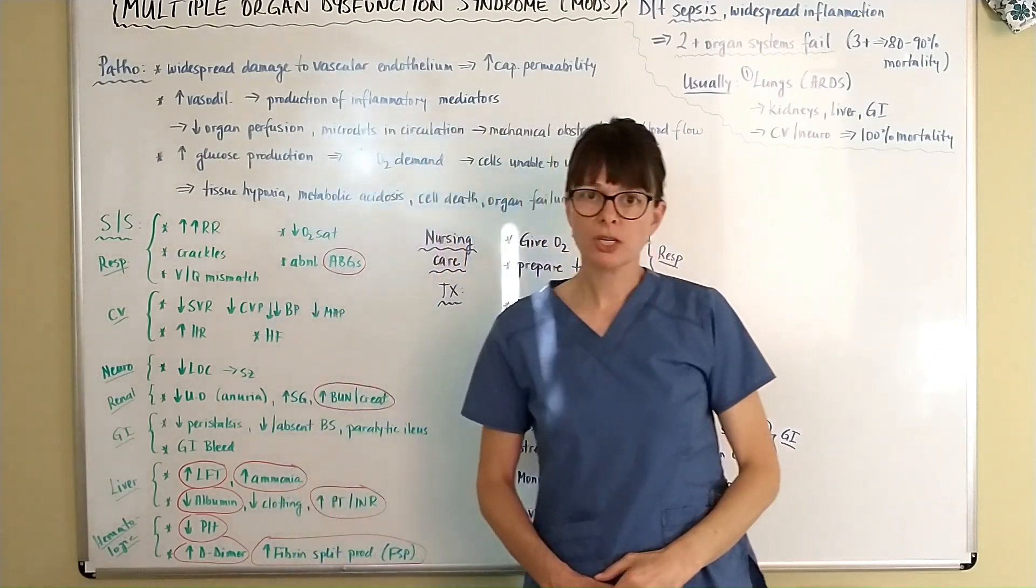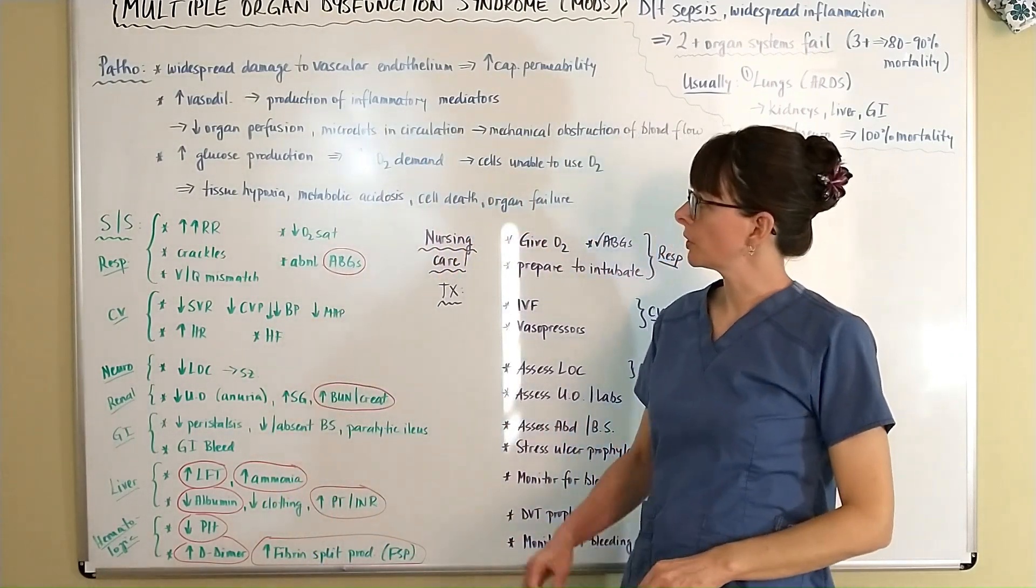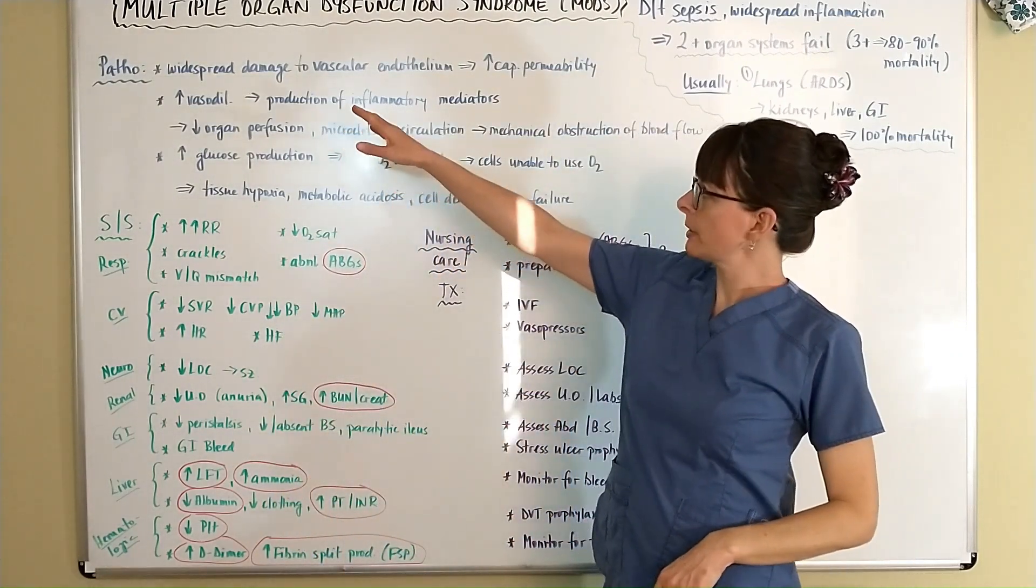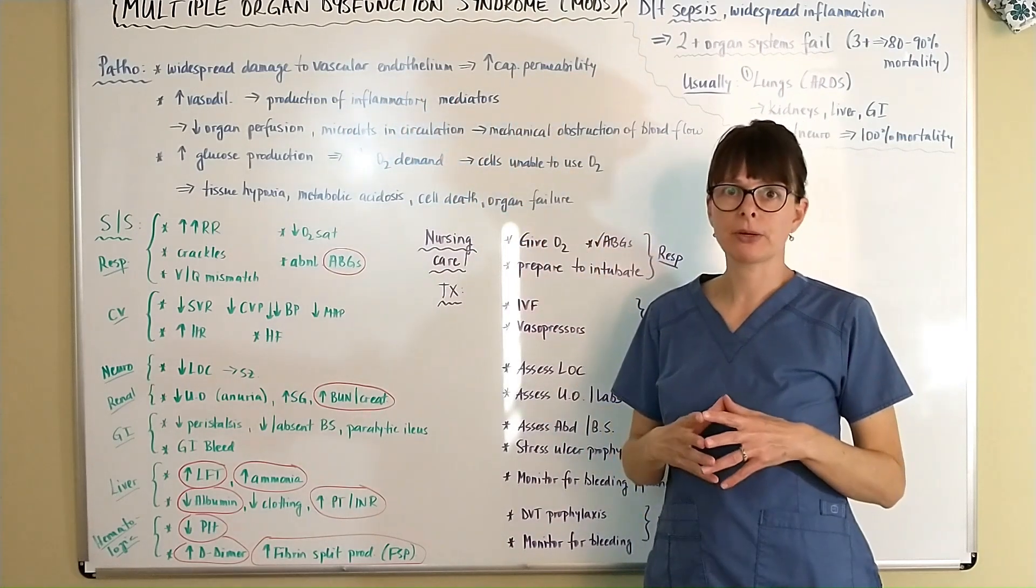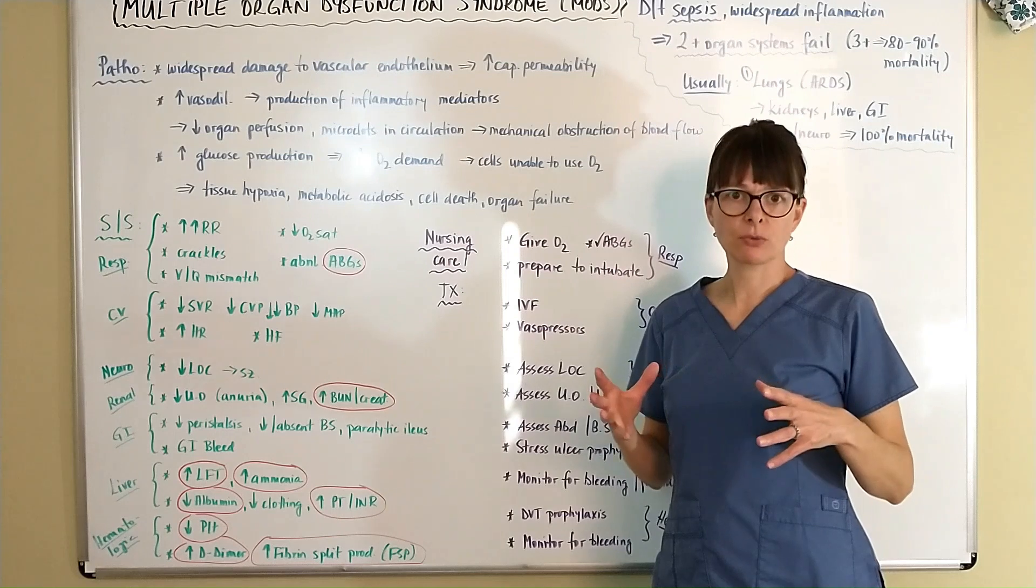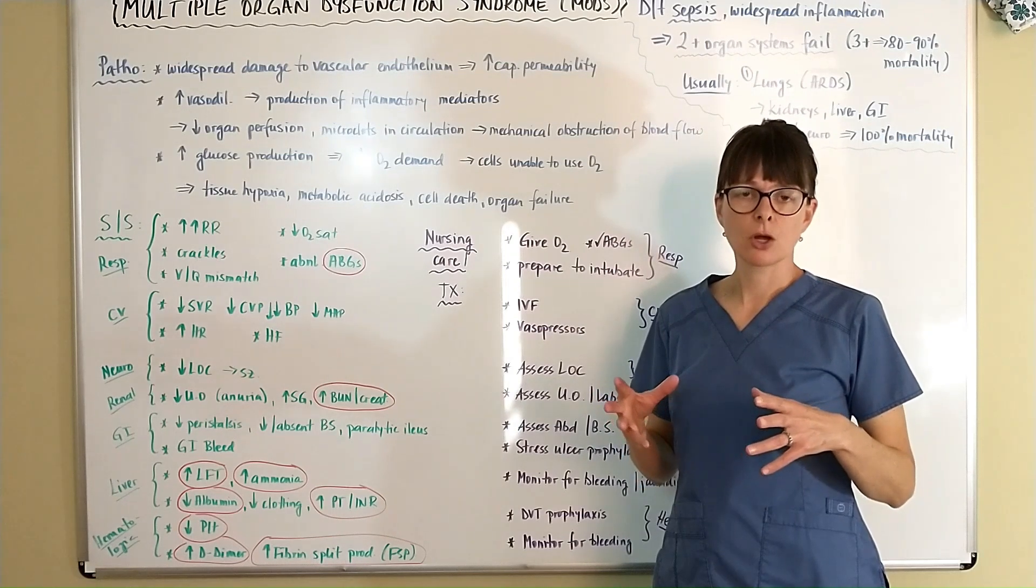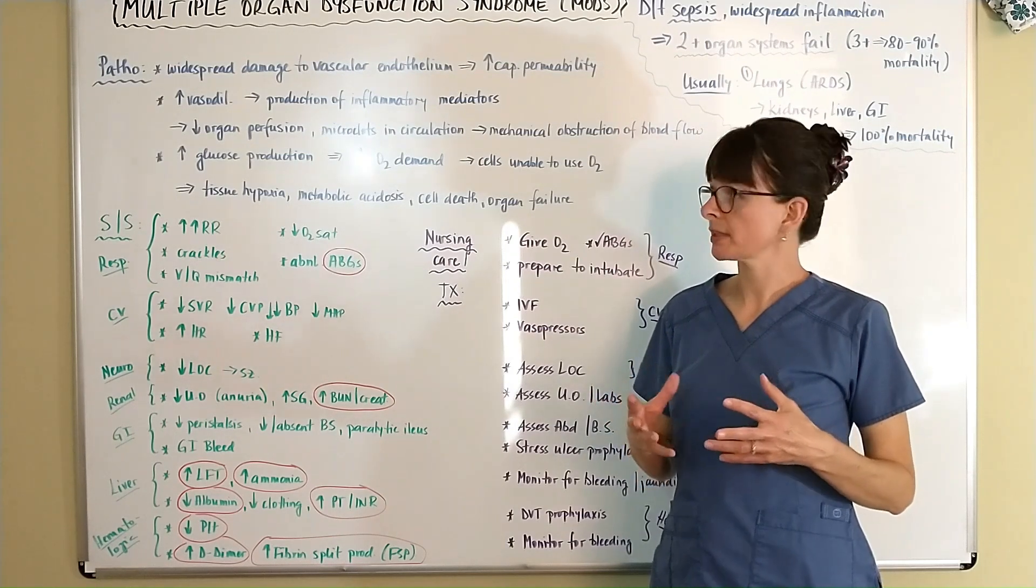So pathophysiologically, quick review here, there is widespread damage to the vascular endothelium that leads to increased capillary permeability because of the release of the endotoxins from the bacteria that are causing the sepsis.